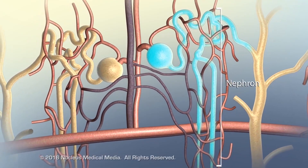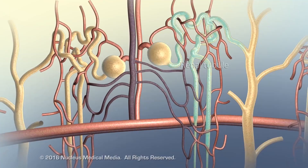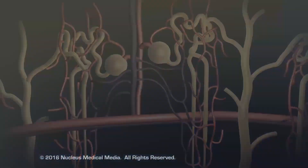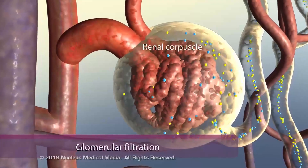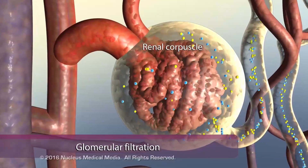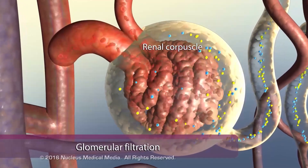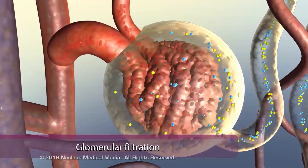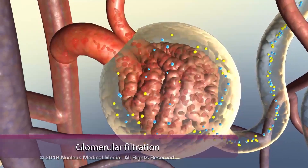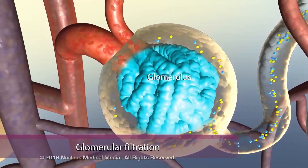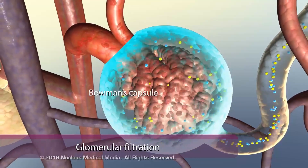Each nephron consists of a renal corpuscle and a renal tubule. The first step of urine production, called glomerular filtration, occurs in the renal corpuscle. It consists of a network of capillaries called the glomerulus, and Bowman's capsule.